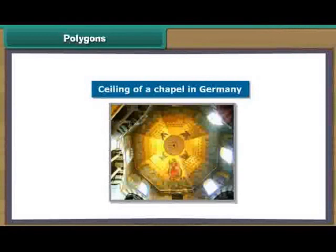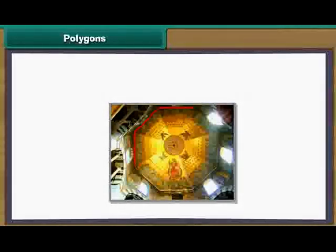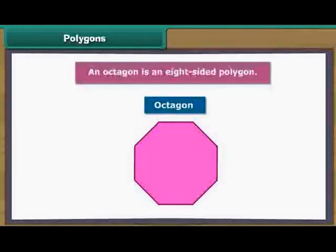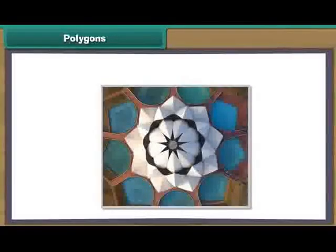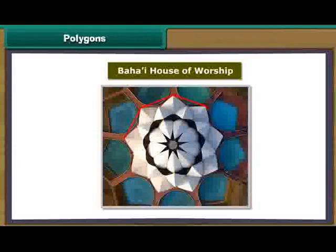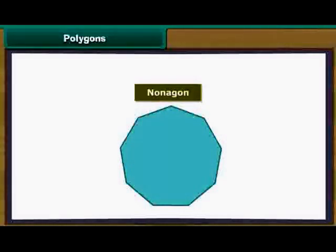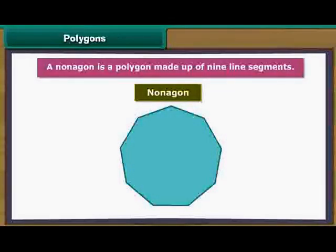This is the image of the ceiling of a chapel in Germany. It has eight sides. An octagon is an eight-sided polygon. Look at this image. It is the Bahai House of Worship. All Bahai Houses of Worship have nine sides. A nonagon is a polygon made up of nine line segments.